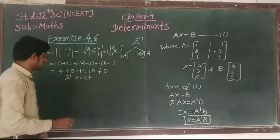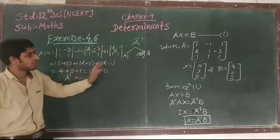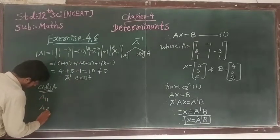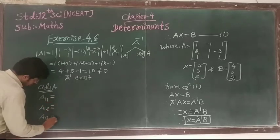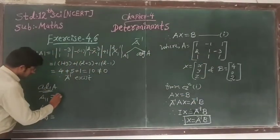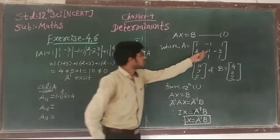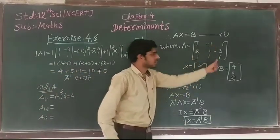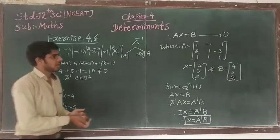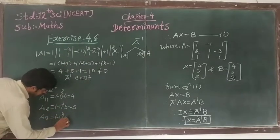Now we have to find the adjoint of A. For adjoint of A, we have to find the cofactors of all elements. Starting with A11: removing first row and first column gives 1 times 1 minus (-2) times 1 equals 1 plus 2 equals 3, so A11 equals plus 1 times 3 equals 3... wait, it gives 4. A12: removing first row second column, 2 times 1 minus (-2) times 1 equals 2 plus 2 equals 4... so minus 1 raised to 3 times result gives minus 5. A13: removing first row third column, 2 minus 1 equals 1, so plus 1 times 1 gives 1.